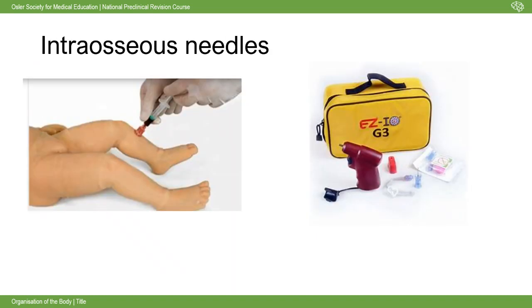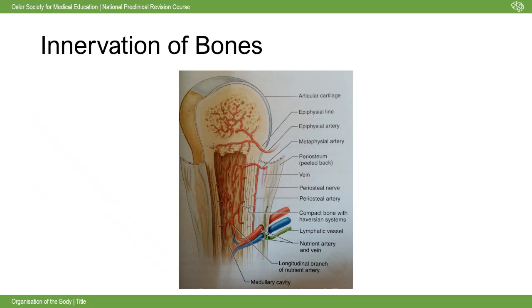Bones are very vascular, and we actually use them as vascular access in emergencies, especially in paediatric cases. Children's blood vessels are tiny, so if a child is hypothermic from a drowning accident and you can't find a vein, intraosseous guns can put a special needle into the bone to deliver drugs. This works because bone is so highly vascularized, both for its metabolic function and for producing new cells.